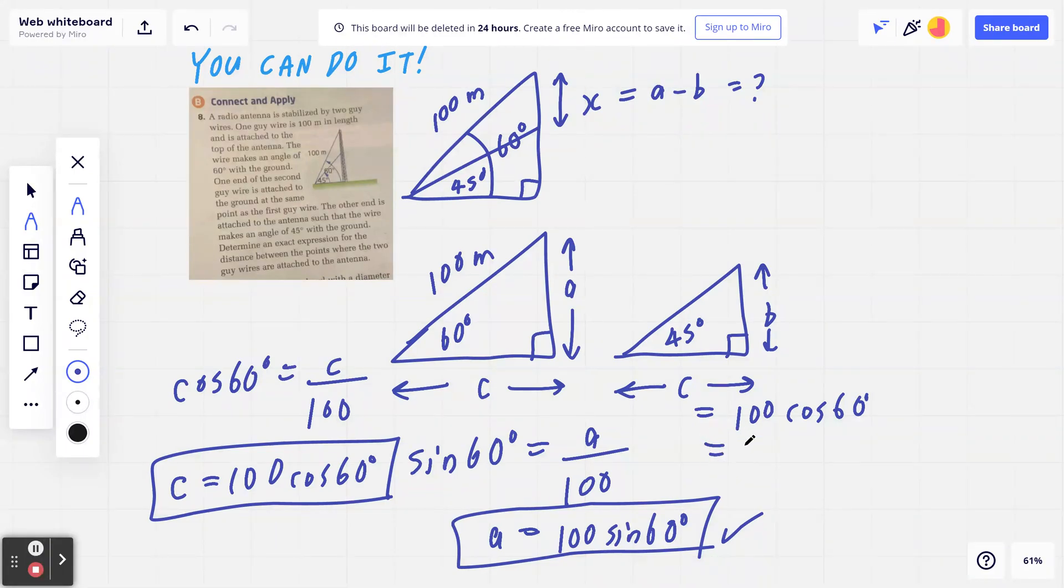If you think about this a little bit more, cosine 60, by the way, is exactly half. So you can think of this as 50. So I can even go back and say c equals 50, which is going to help you a little bit in terms of this next step. So I'm going to erase all this, and I'm just going to label this as 50.